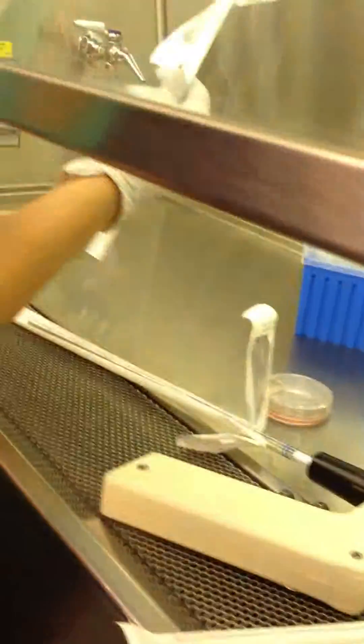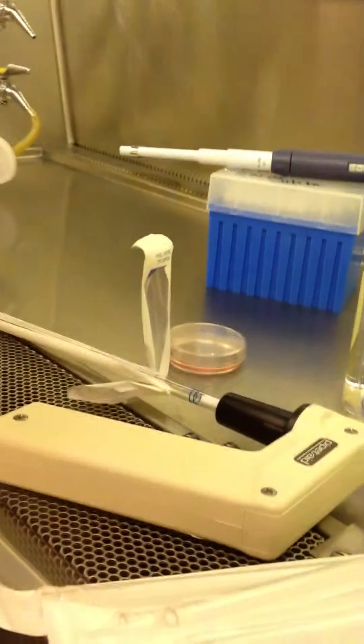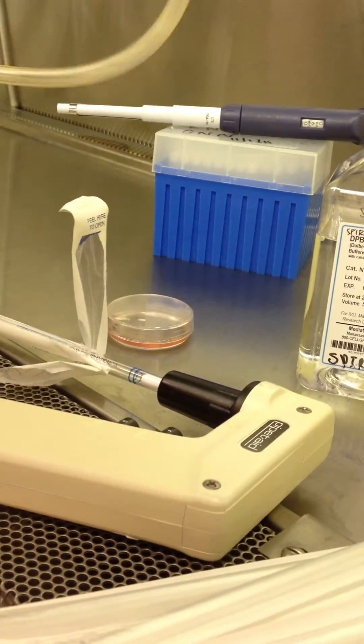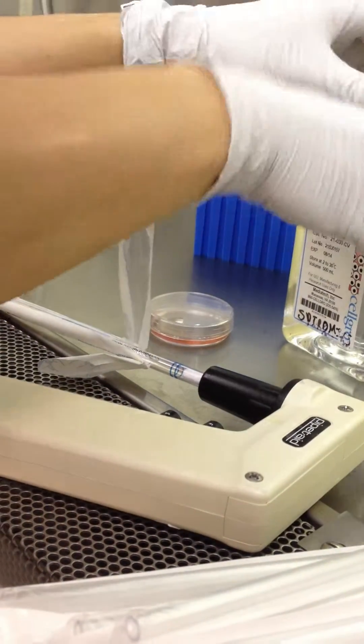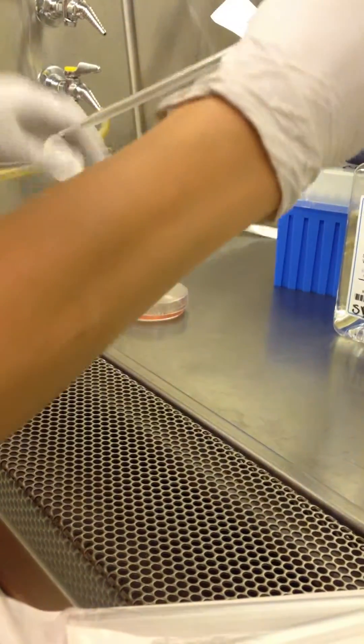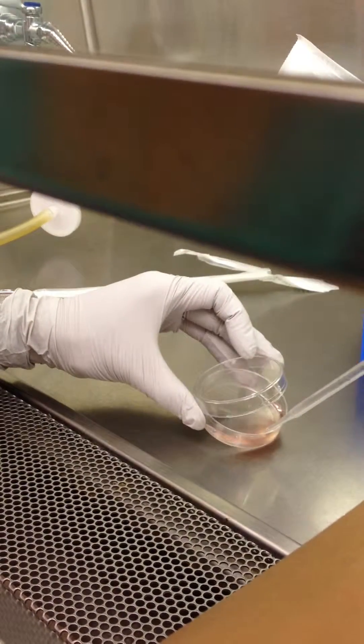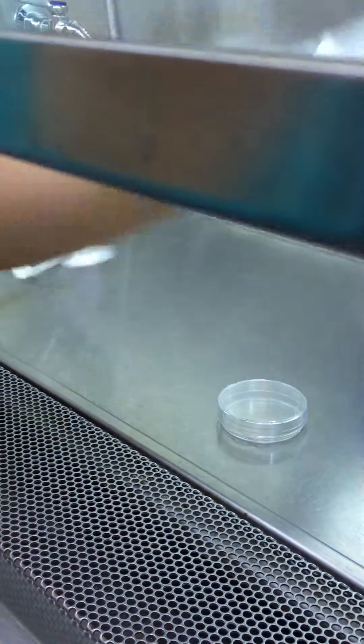I use the aspirating, turn on the vacuum. So like I said, I'm going to tilt the plate. Try to not open the plate as much as possible. Just expose it as little as you can. And you want to work quickly because you don't want the cells to dry out and die.